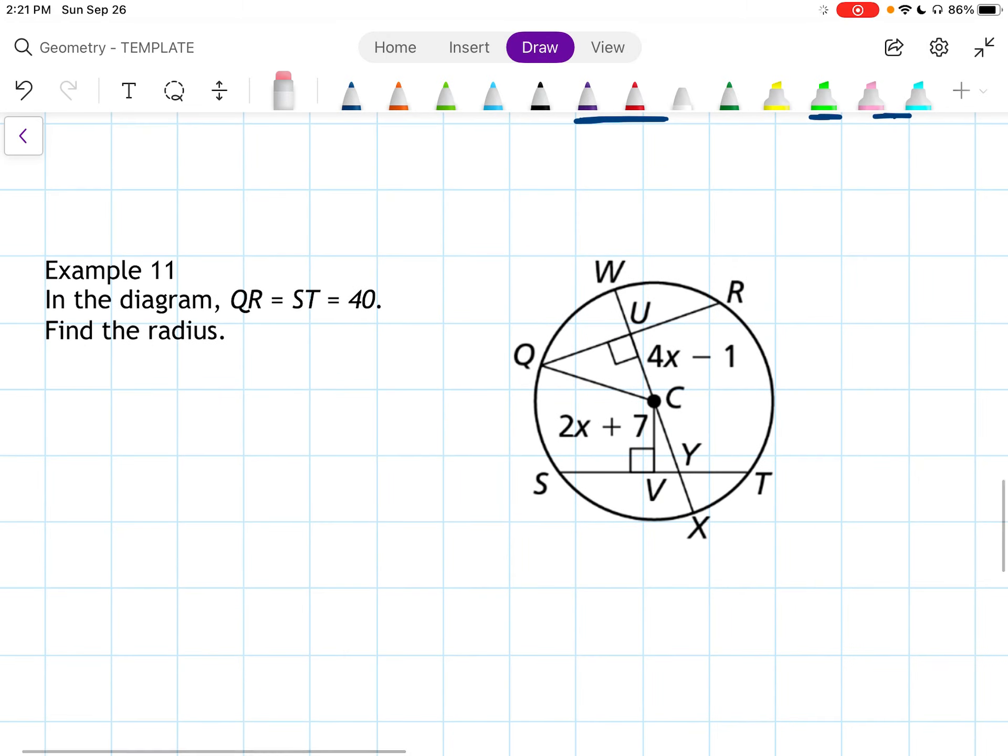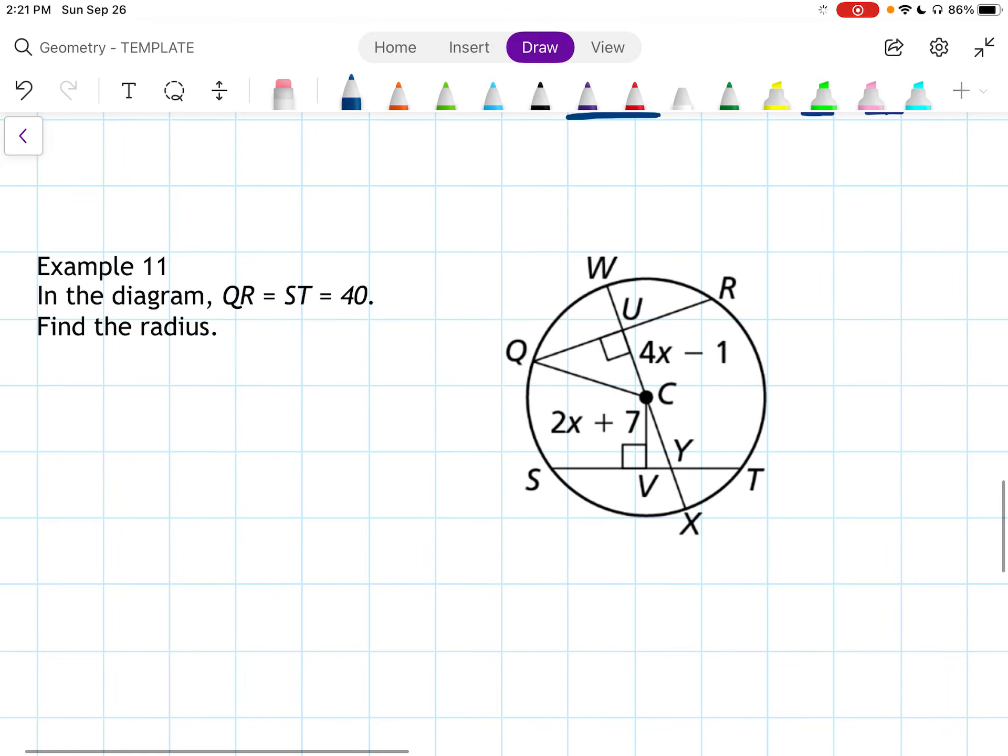Alright, Example 11. In the diagram, QR is congruent to ST, which is 40, and we're supposed to find the radius. So this, this, this, this, and that are all equal to 20, because that's half of 40. Now there's different ways we could do this problem. I'm going to look at this right triangle right here.